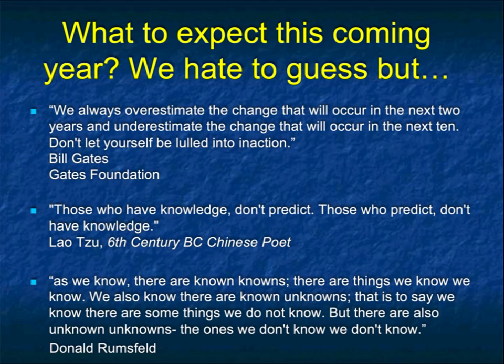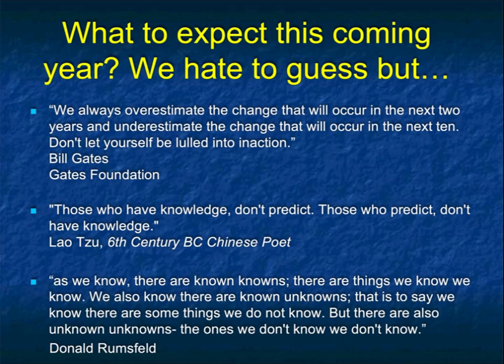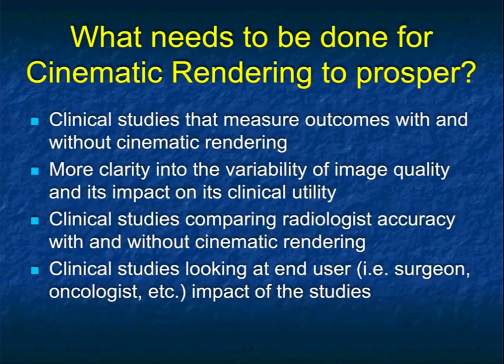So what to expect this coming year? We hate to guess — because if I had guessed last year, I would not have guessed COVID. Bill Gates: we always overestimate the change that will occur in the next two years and underestimate the change that will occur in the next ten. Lao Tzu, going back 1500 or 1600 years: those who have knowledge don't predict; those who predict don't have knowledge. And Don Rumsfeld: there are the known knowns — the things we know we know. We also know there are known unknowns — we know there are some things we don't know. But there are also unknown unknowns — the ones we don't know we don't know. To me, those unknown unknowns are really the exciting things.